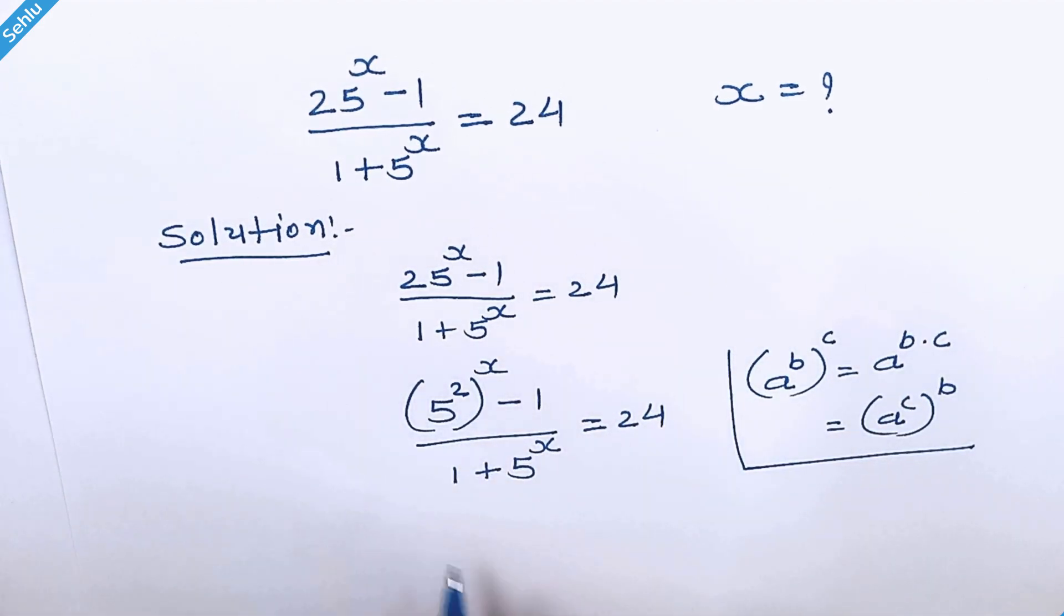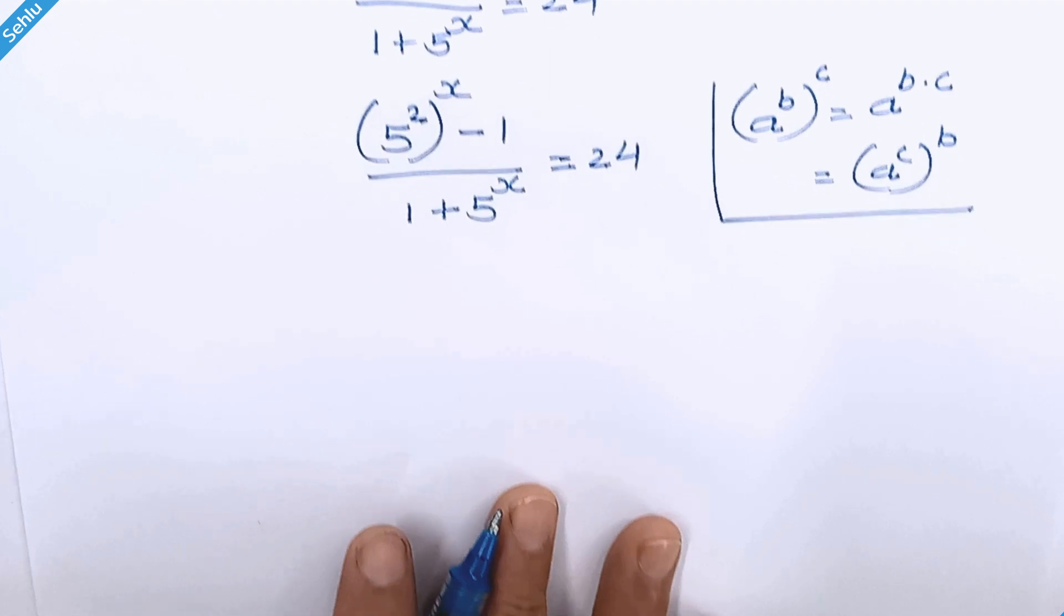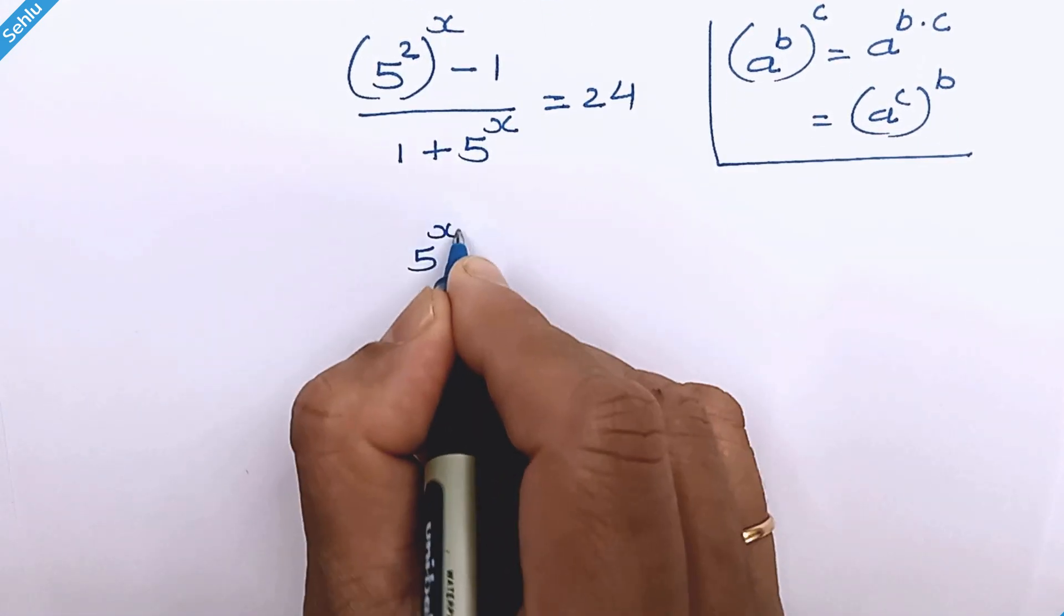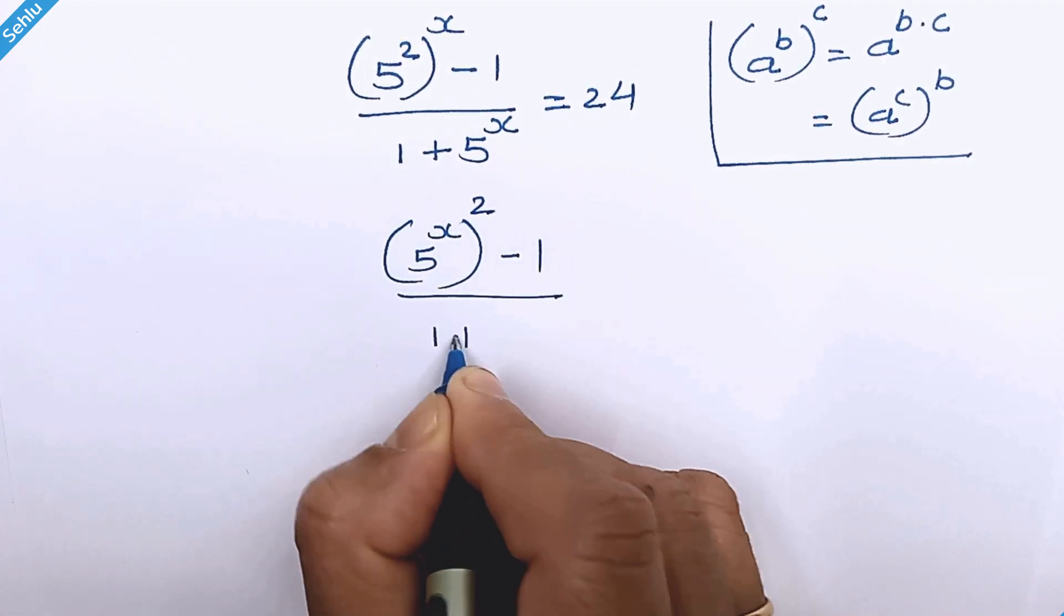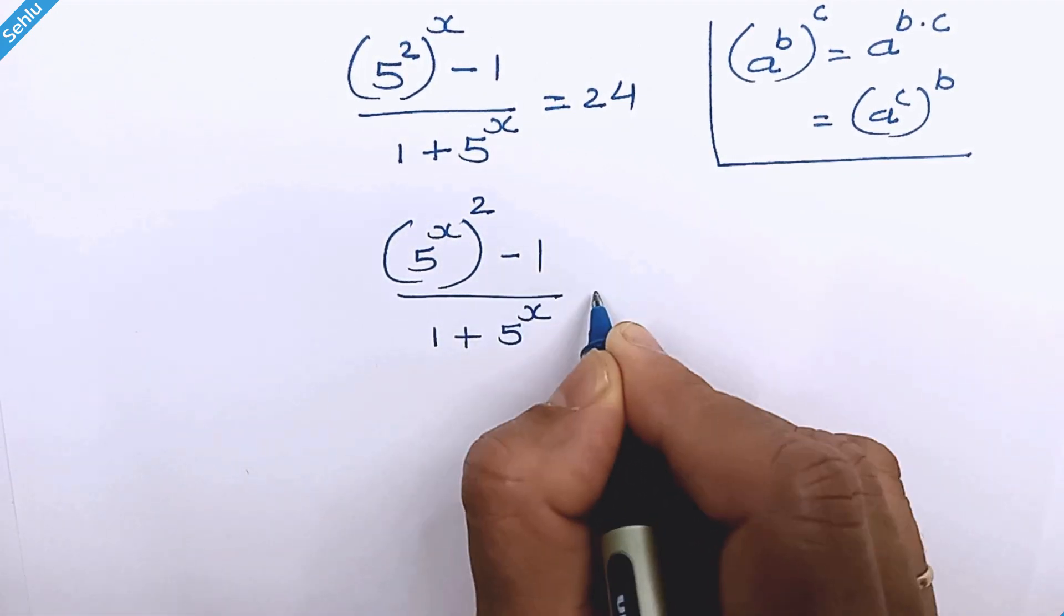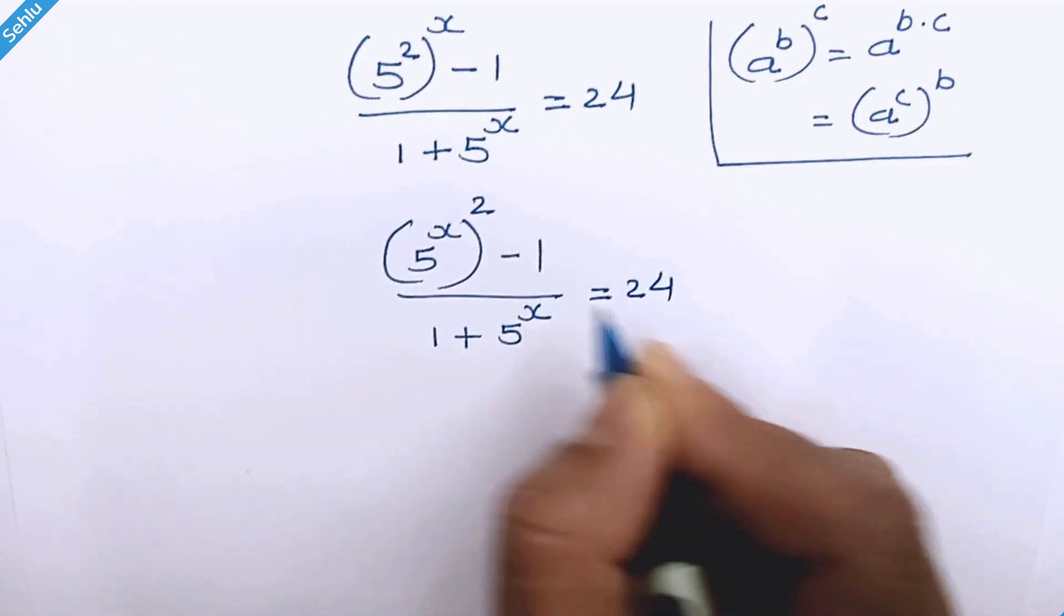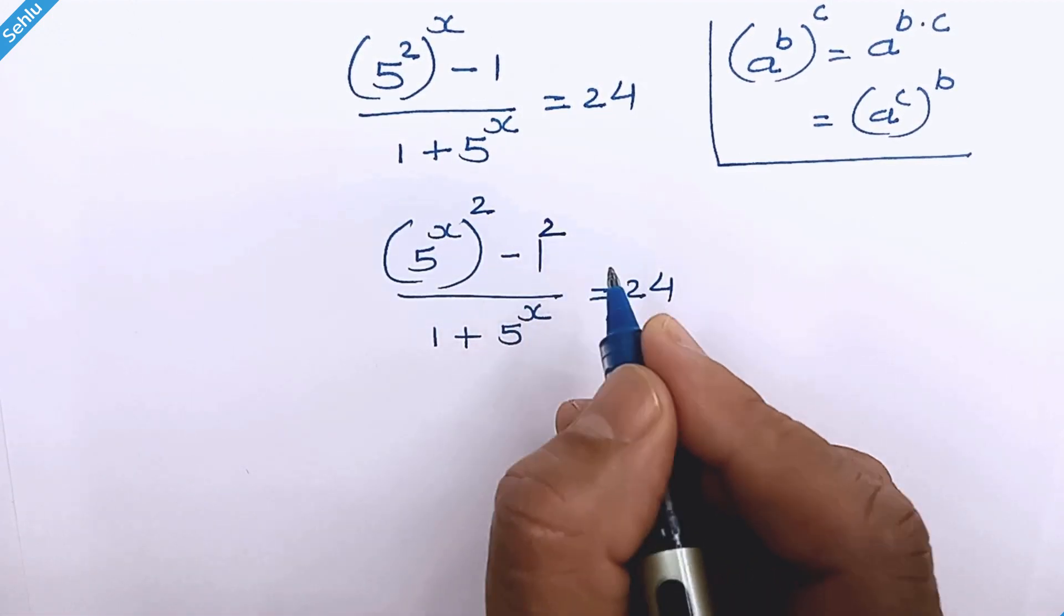So this part can be written as 5 raised to x whole square minus 1 over 1 plus 5 raised to x is equal to 24. 1 can be written as 1 square.